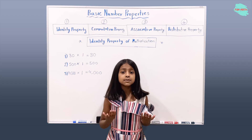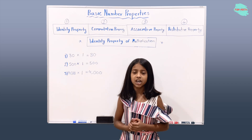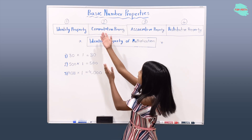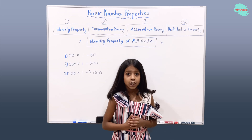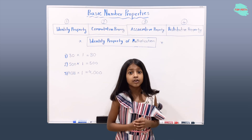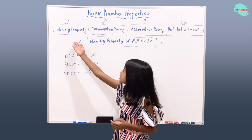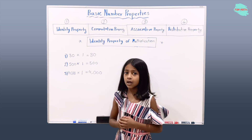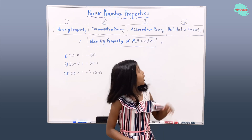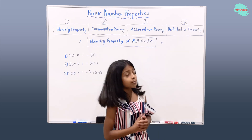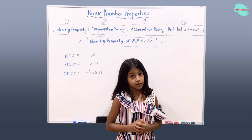Hi, welcome to Fun Math. Today we're going to be talking about basic number properties. Here we have four types of properties, which are the identity property, commutative property, associative property, and the distributive property.